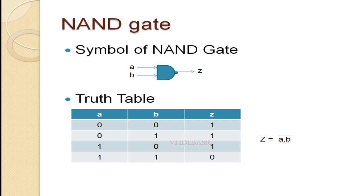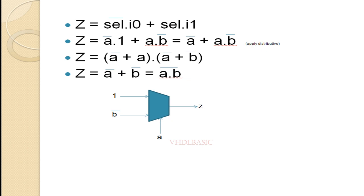The Boolean expression of the NAND gate is (A dot B) whole bar. Now I am going to connect I0 with 1, B-bar to I1, and A to Select. So whenever A equals 0, output Z will be 1, and whenever A equals 1, output Z will be B-not.